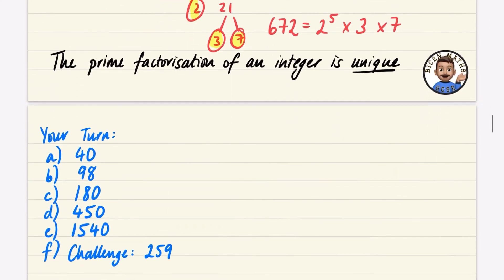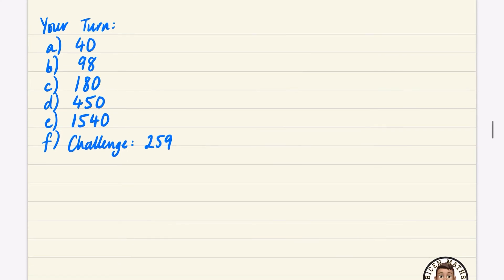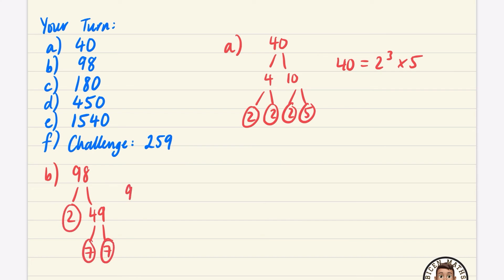Now some practice questions. For 40: split into 4 × 10, giving 2 × 2 × 2 × 5 — all prime — so 40 = 2³ × 5. For 98: split into 2 × 49, and 49 = 7 × 7, so 98 = 2 × 7².